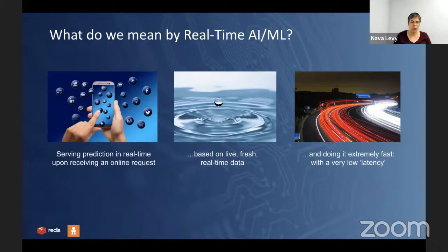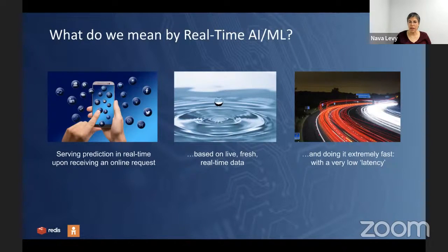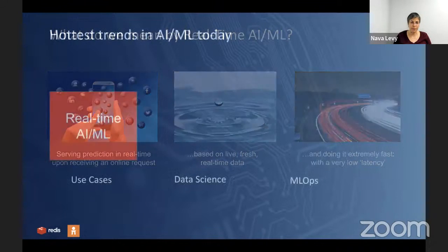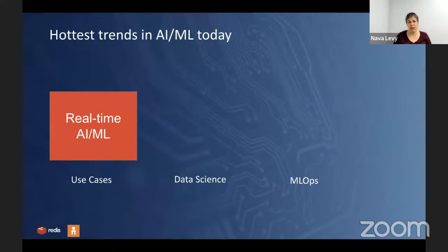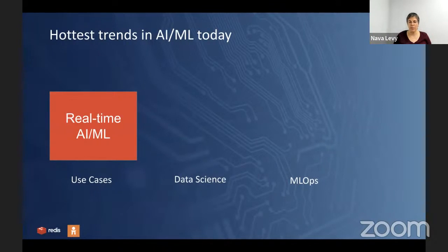This is not data from a day ago, but live, fresh data from streaming sources — a click stream, my location, the last transactions — done extremely fast with very low latency, measured in milliseconds, which is one thousandth of a second. The trend towards real-time AI/ML is very strong. The more real-time the use cases are, the more value they have and the more mission critical they are.